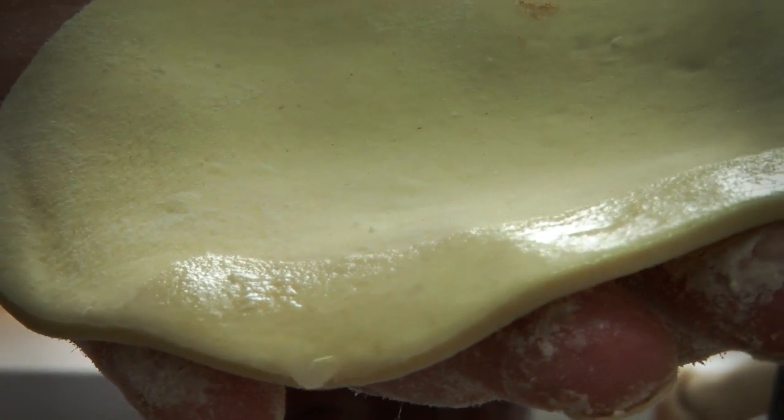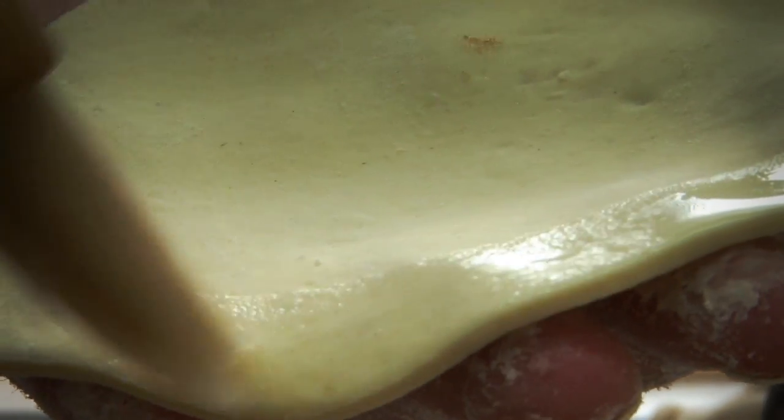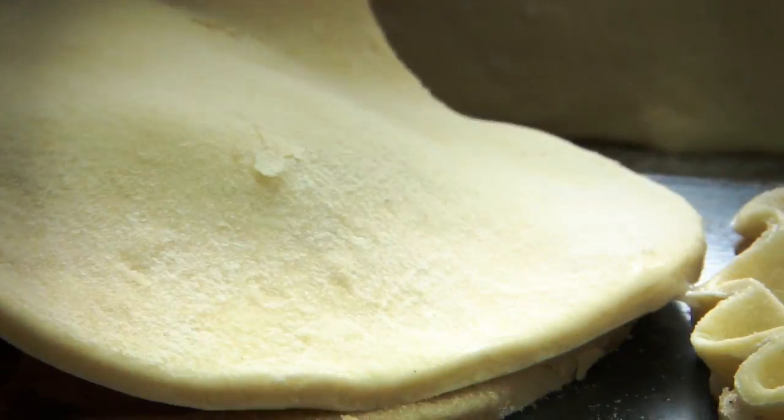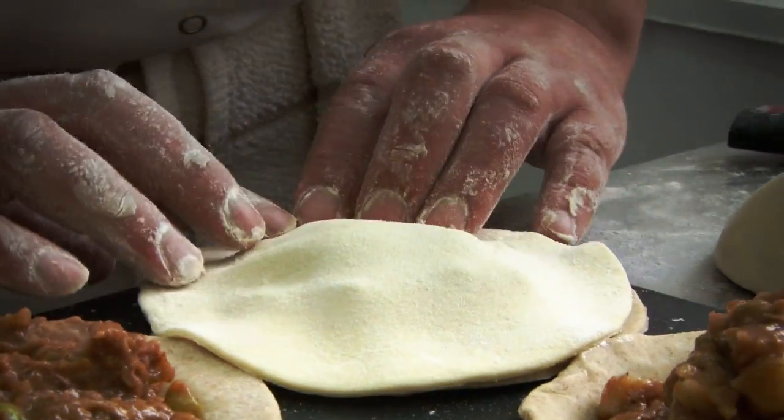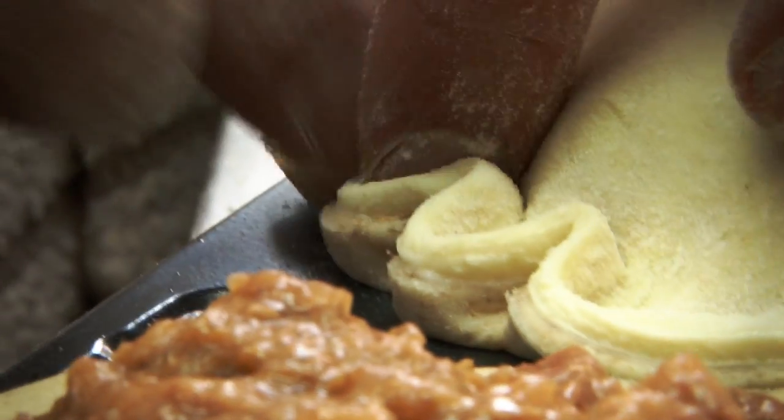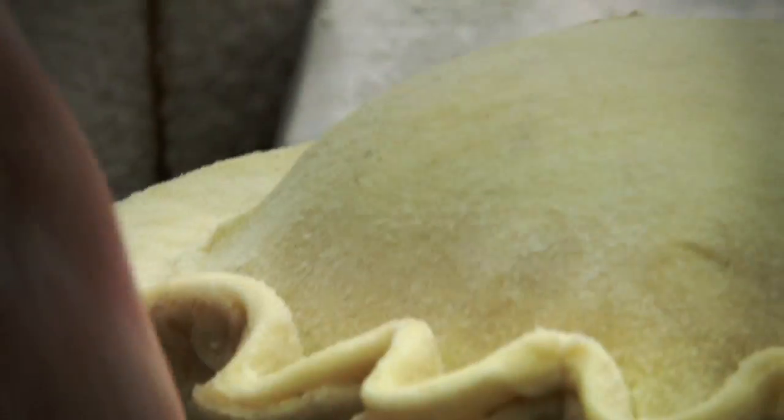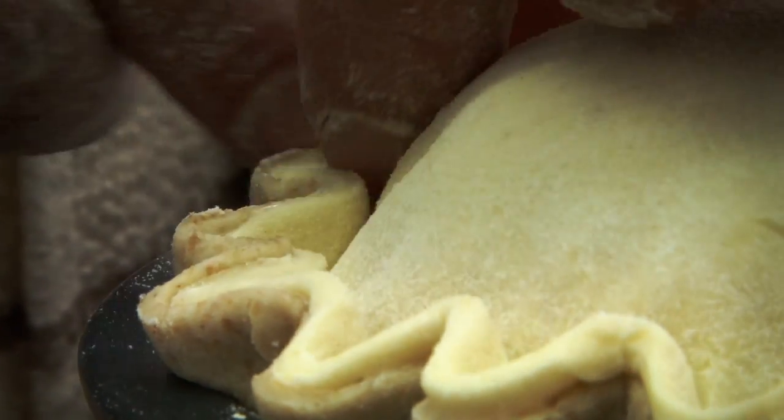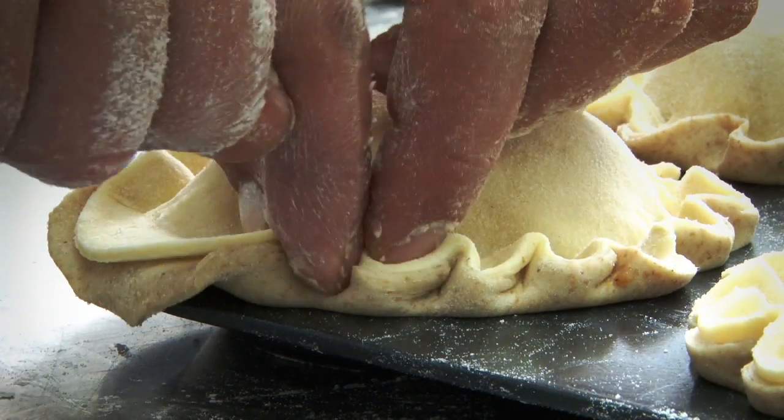I'm just glazing the top of the pie so that it will stick to the bottom of the pie, and you start fluting it. Fluting is the pretty pattern that you see on the edge of pies. Actually, as well as looking pretty like this, it does have a very useful function and it stops the top and the bottom of the pie coming apart.